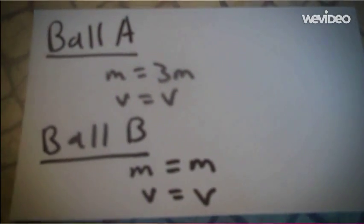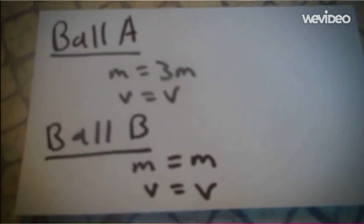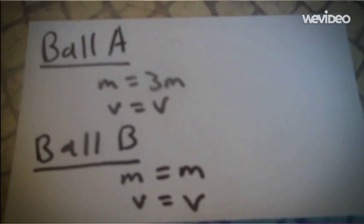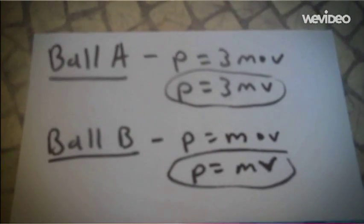Final example. If ball A has a mass of 3m and a velocity of v, and ball B has a mass of m and a velocity of v, how much more momentum does ball A have? Three times more.